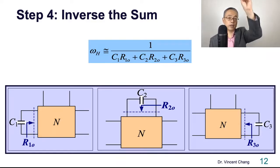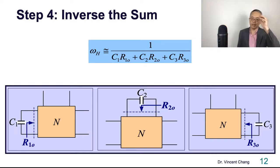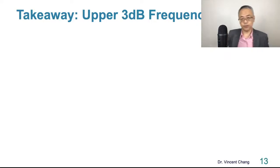So the key step is supposed to be in step number two. And step number one is just set VI to zero. So key step is to find out the R1O, R2O, and R3O.